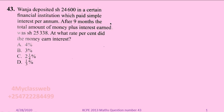This question reads: Wanja deposited shillings 24,600 in a certain financial institution which paid simple interest per annum. After nine months, the total amount of money plus the interest earned was shillings 25,338. At what rate percent did the money earn interest? This question was number 43 and it was tested in the KCPE for the year 2013.